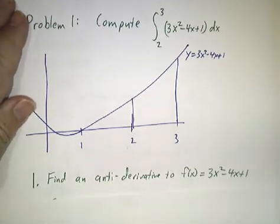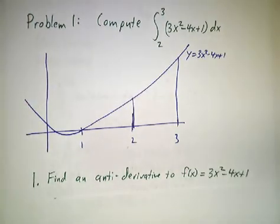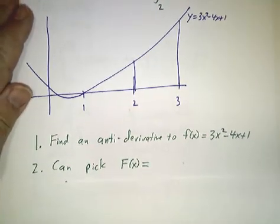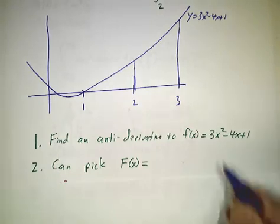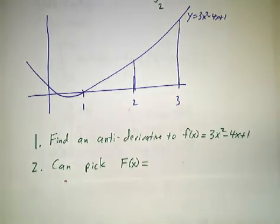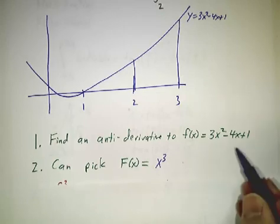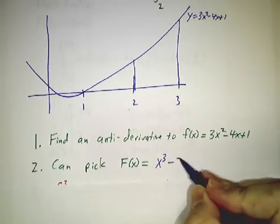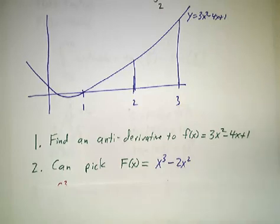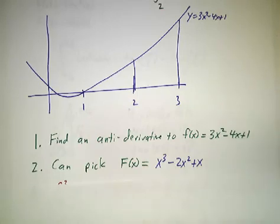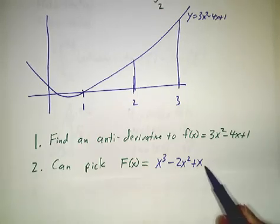The first thing we have to do is find an antiderivative. What's a function whose derivative is 3x²? That would be x³. And what's a function whose derivative is 4x? That would be 2x². And what's a function whose derivative is 1? That would be x. So we've found ourselves an antiderivative.